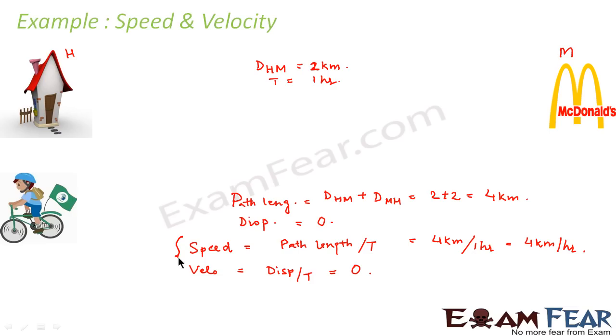So when I calculated the speed and velocity, I talked of the total journey. Total journey means going from home to McDonald's and then coming back from McDonald's to home. But if we consider only one way, that is only from home to McDonald's, then both speed and velocity will be equal and both will be equal to 2 kilometers per hour. I hope it is clear to you now.